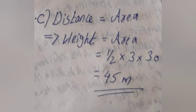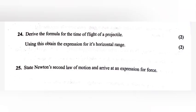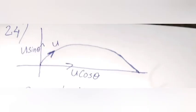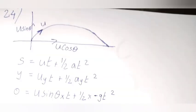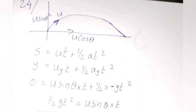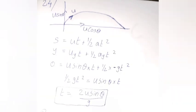Question 24: Derive the formula for the time of flight of a projectile. Using s = ut + ½at², for vertical motion: 0 = u·sinθ·t + ½(-g)t². Simplifying: ½gt² = u·sinθ·t, therefore t = 2u·sinθ / g.